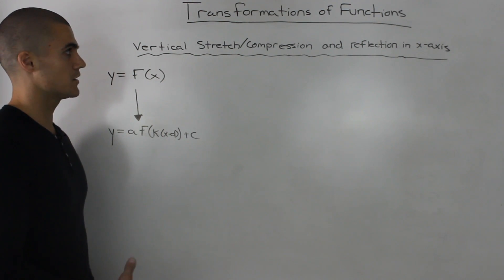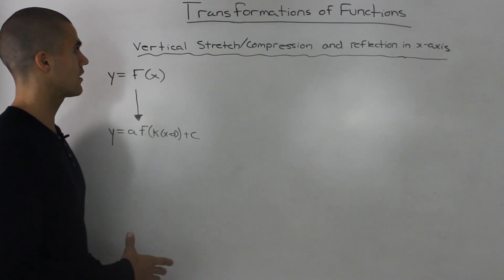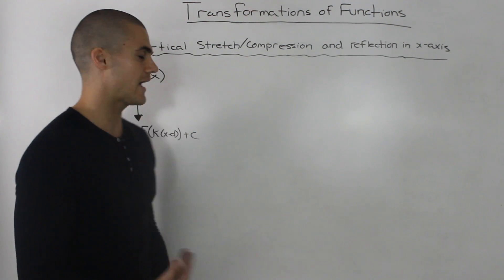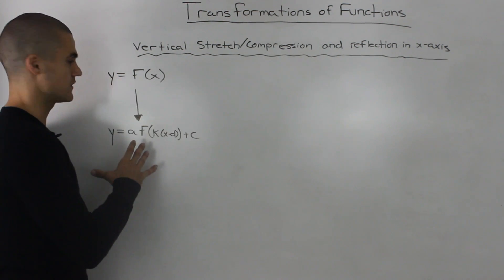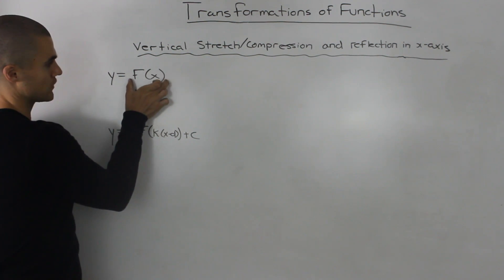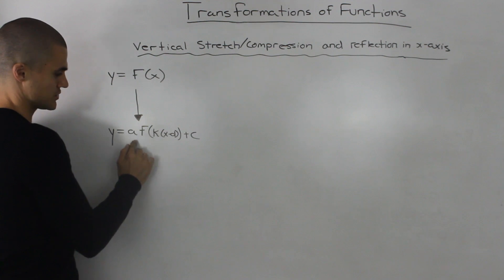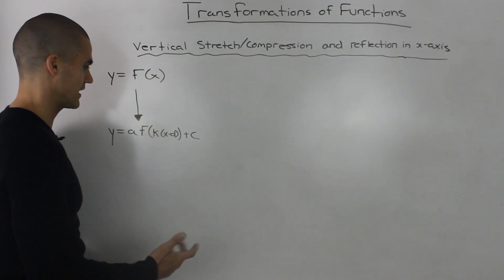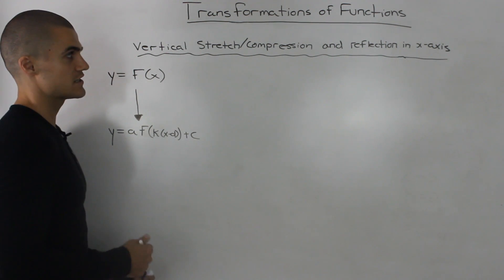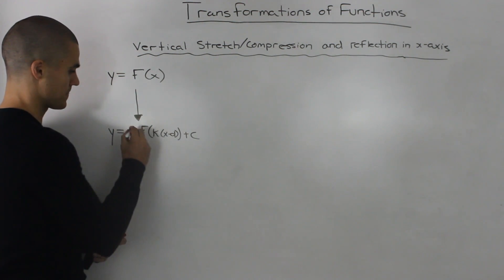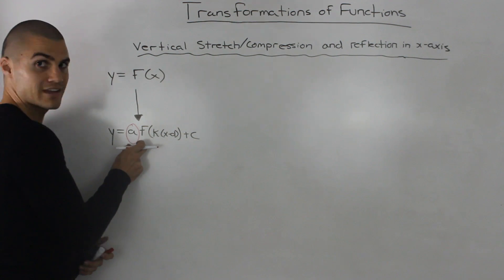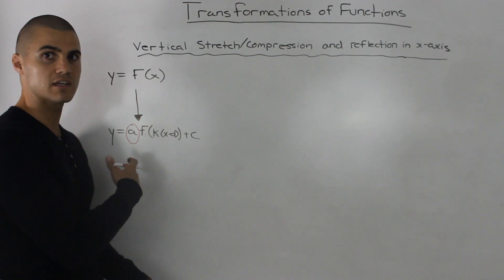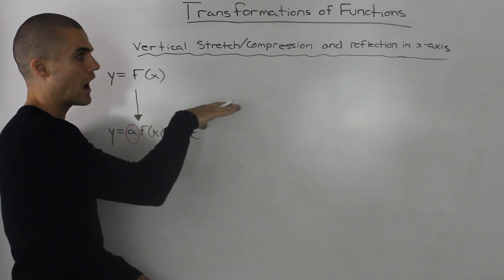Now we're going to talk about specific transformations, starting with the vertical stretch or compression of a function and whether it's reflected in the x-axis. As a review from the previous video, we have a parent function f(x) that undergoes a transformation into af(k(x-d))+c, where a, k, d, and c are any numbers. Whether a function is vertically stretched, compressed, or reflected in the x-axis depends on the value of a. We'll go through the different cases for the value of a and describe what each case means.